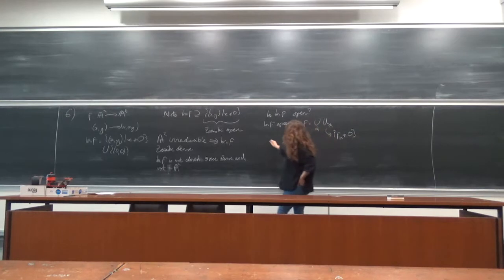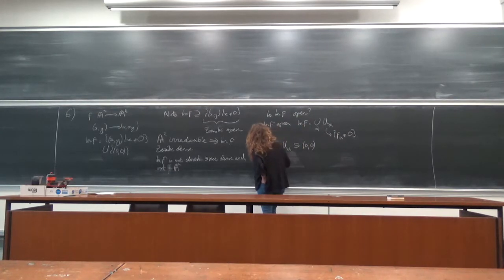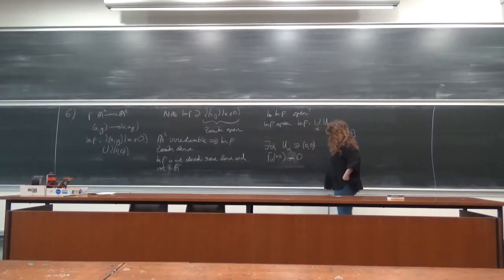Okay, and therefore I have the fact that there exists an alpha which contains the point (0, 0). So I have this f_alpha of (0, 0) is not equal to zero.